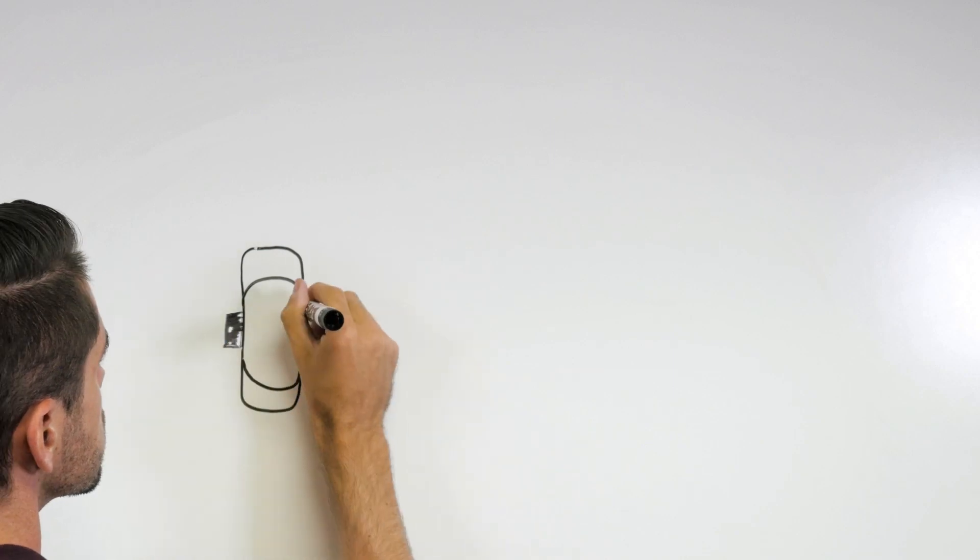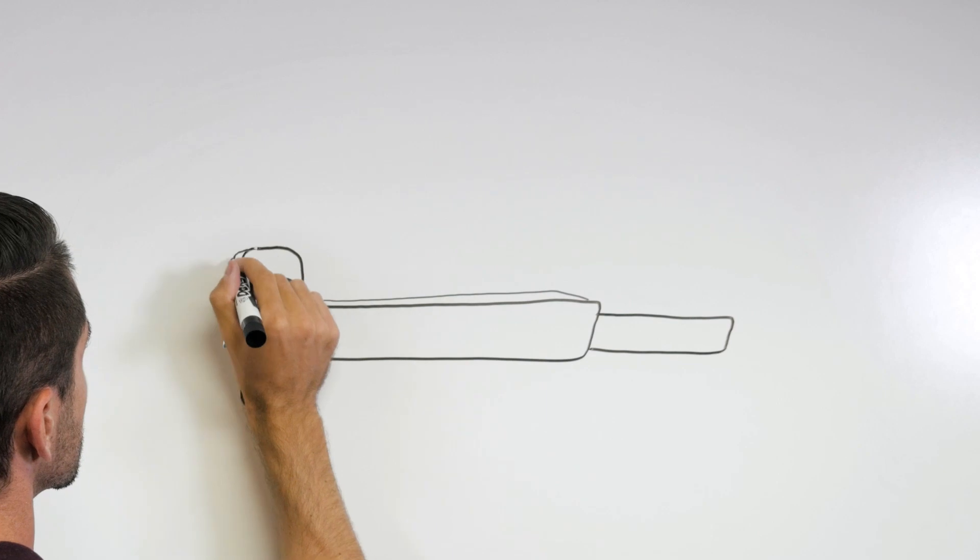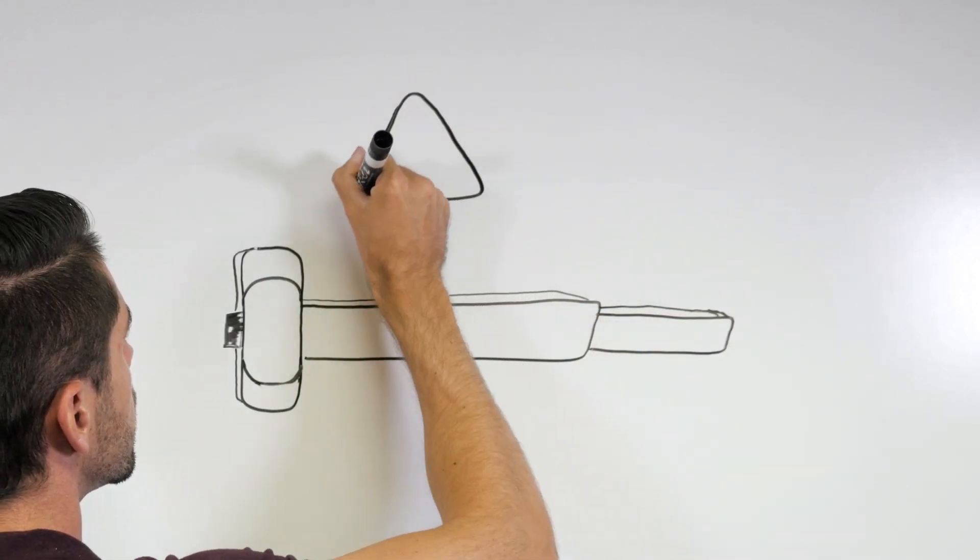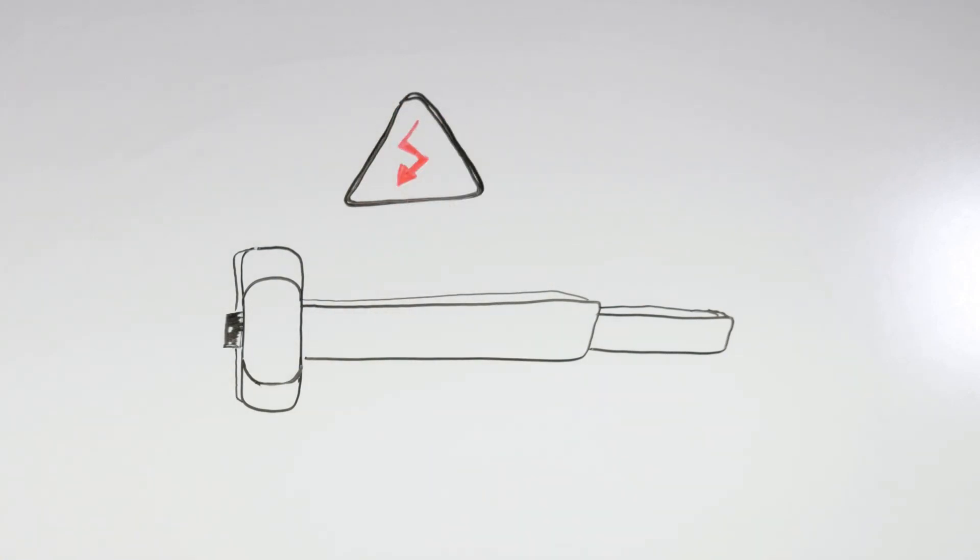Some electrified hardware is always fail secure, such as the von Duprin electric latch retraction exit devices. The latches on these devices are extended and engaged with their strikes when there is no power going to the devices. To retract the latches so someone can pull the door open from the outside, there must be power sent to the device. These devices work well on exterior doors because if power is cut, the devices will be locked from the outside. Remember, you can always exit through doors equipped with panic hardware.